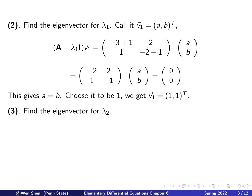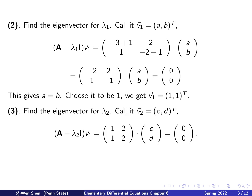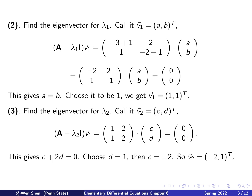We carry out a similar procedure to find the eigenvector V2 for lambda 2 with components C and D. Subtracting lambda 2 from A gives the matrix [1, 2; 1, 2] times [C, D] equals 0. This gives the single constraint: C plus 2D equals 0. Choosing D equals 1, we get C equals negative 2. So V2 is [negative 2, 1].